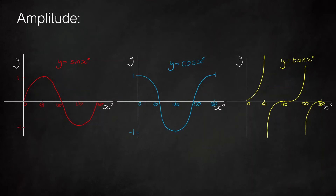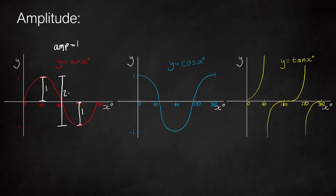Now we'll bring all three graphs side by side to talk about amplitude. The amplitude is defined as the distance between the middle of the graph and the top, which in this case is 1. It can also be defined as half the distance from the top to the bottom — here the distance between top and bottom is 2, so we divide that by 2 and again get 1. This second definition might be more useful when we come across more complicated graphs, because it's sometimes hard to tell where the middle is but quite obvious where the top and bottom are.